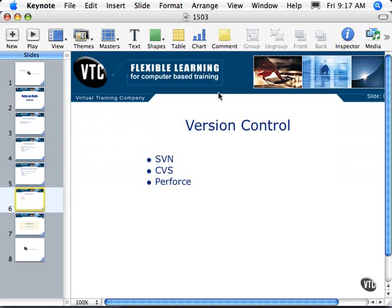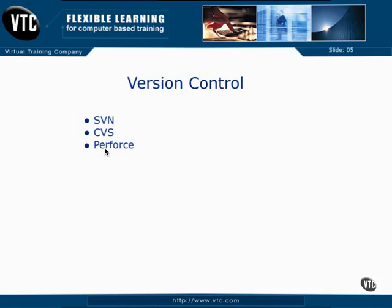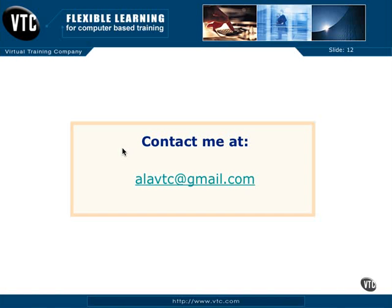The other major players in version control are CVS and Perforce. Subversion and CVS are free open-source tools, while Perforce is a paid system. So there you have it — what you should be thinking about with your backups for Ruby on Rails applications.